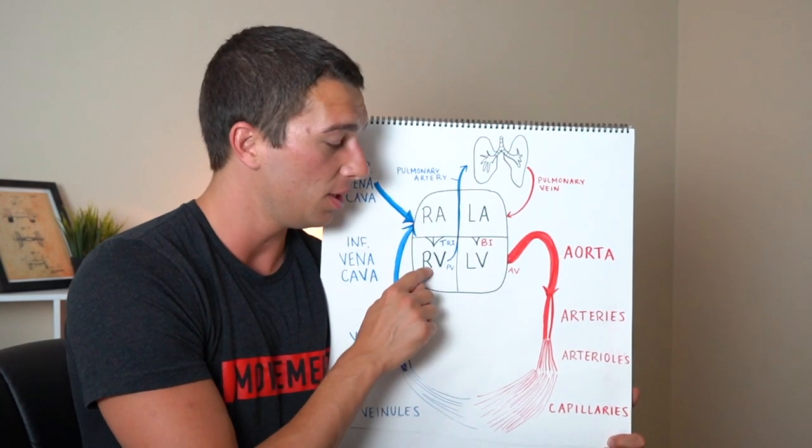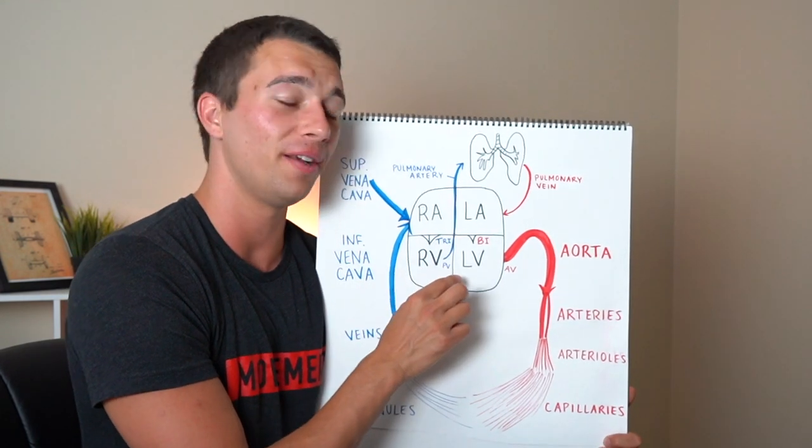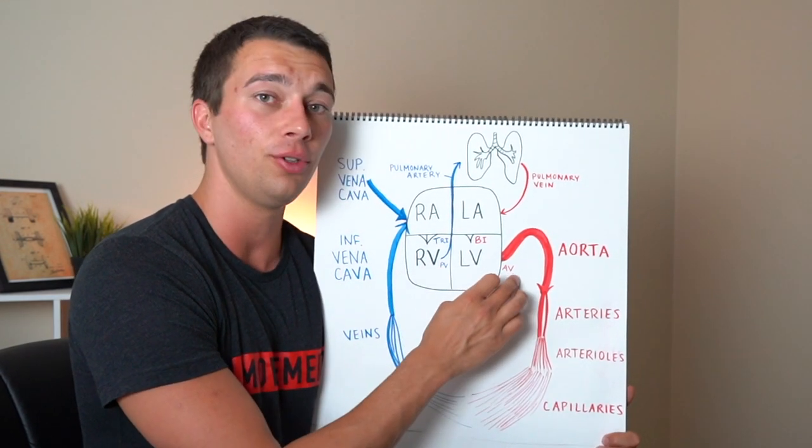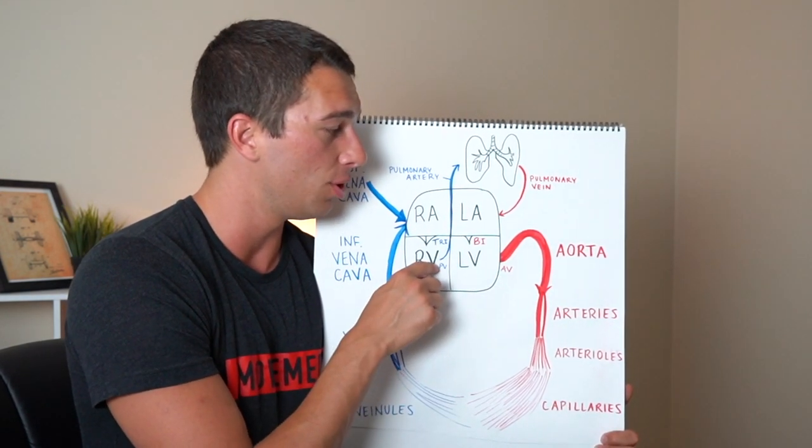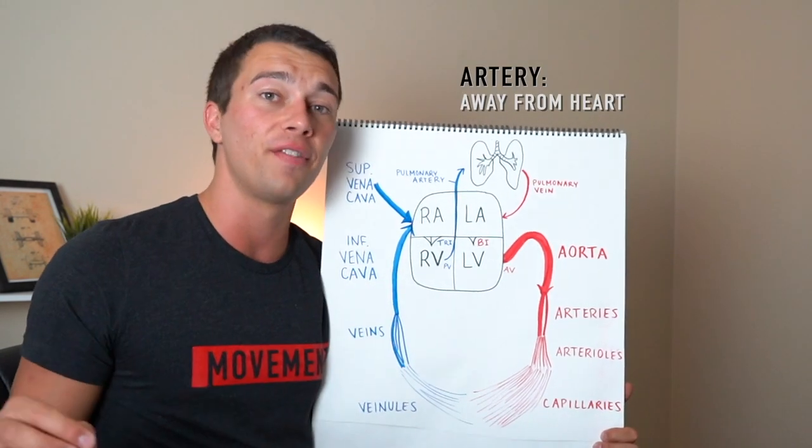Now from the right ventricle we're going to go through the pulmonary valve. The pulmonary valve is one of the semilunar valves and this is going to go to the pulmonary artery. So artery always means away from the heart.